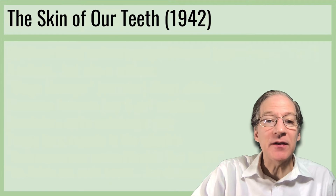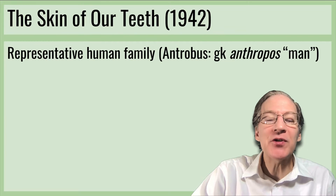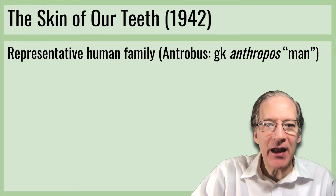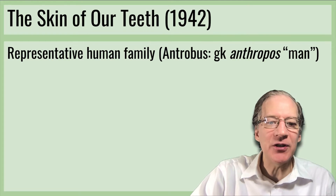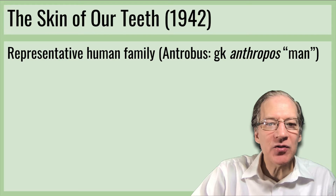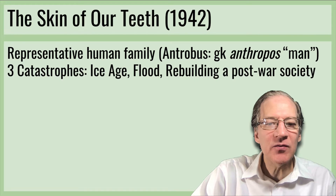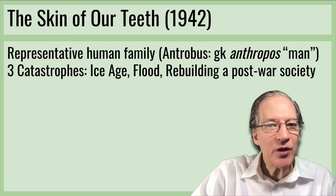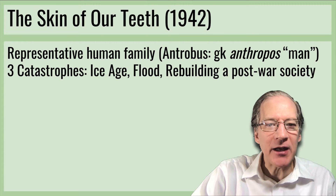The Skin of Our Teeth, 1942, features a representative human family. The name Antrobus reminds us of the Greek 'Anthropos' — man, as in anthropology. The play describes this representative human family going through three catastrophes: an ice age, a flood, and rebuilding a post-war society.